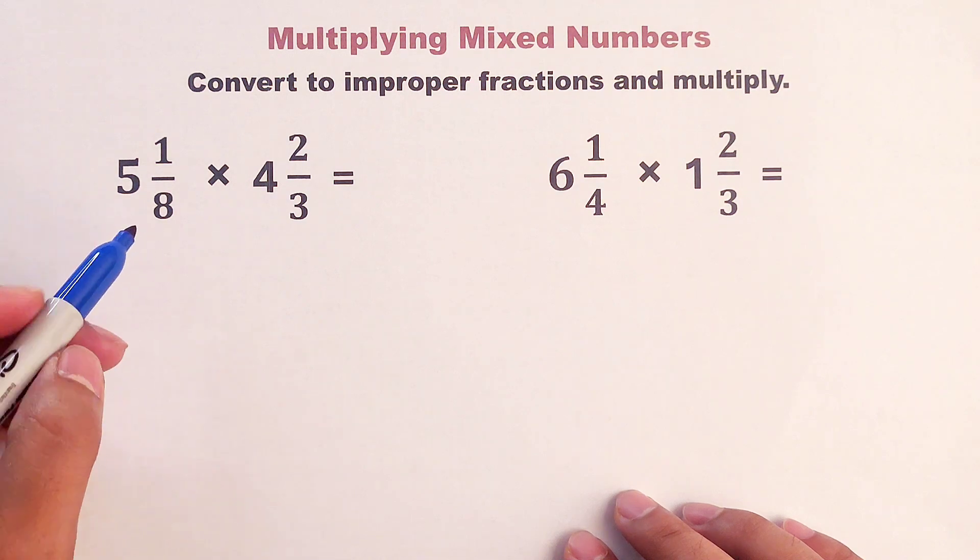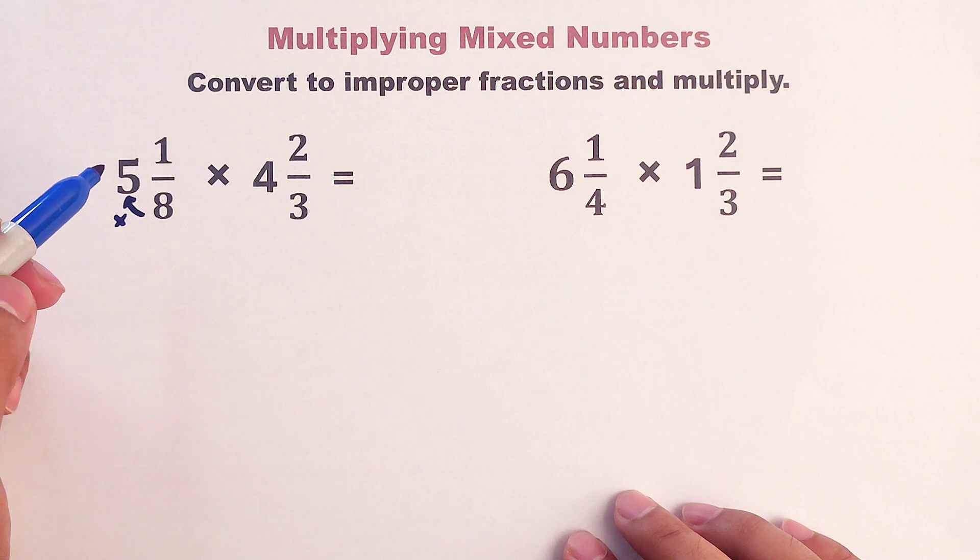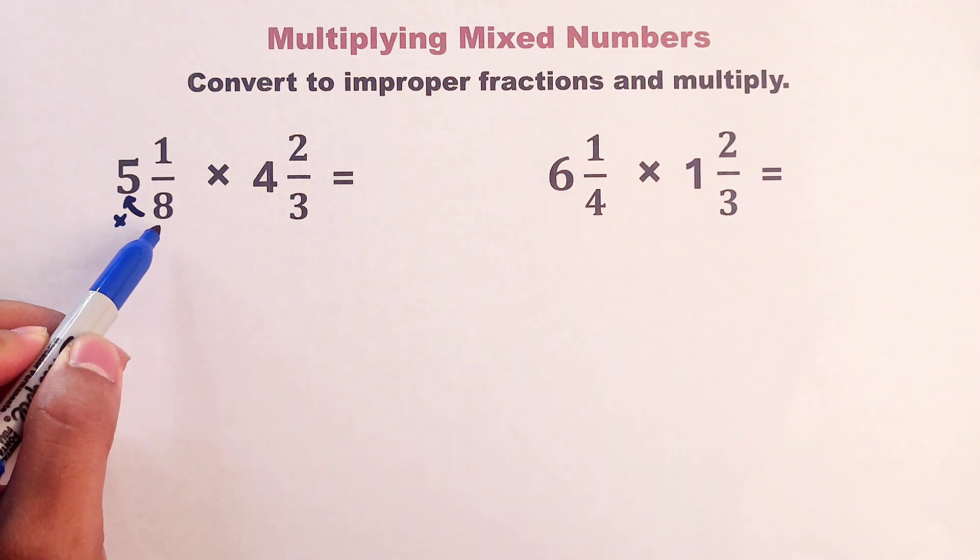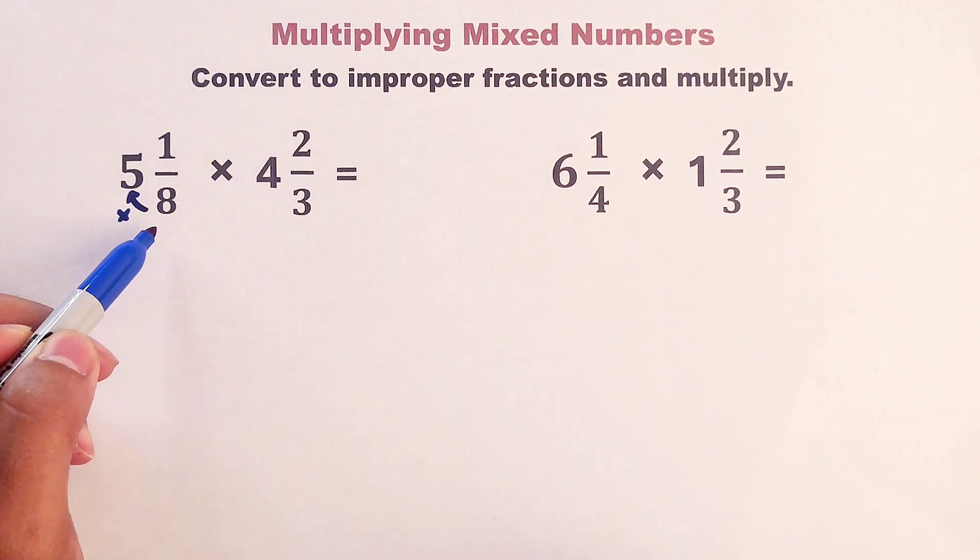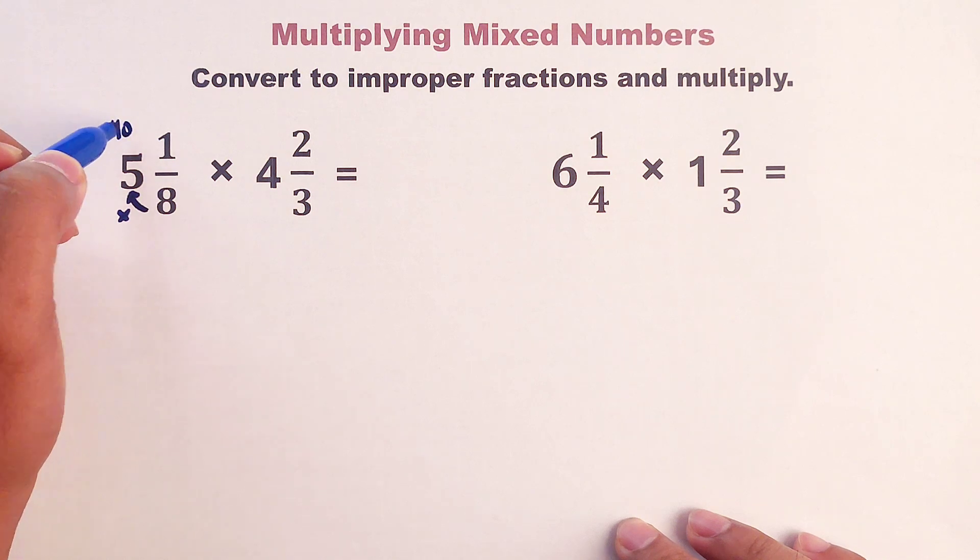So how to do that? We will multiply the denominator and the whole number, that is 8 times 5, which is equal to 40.